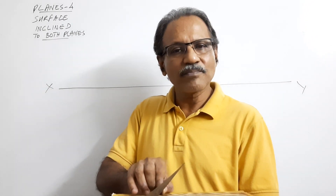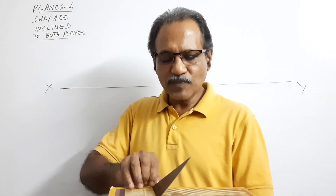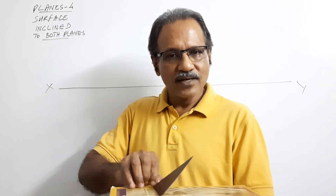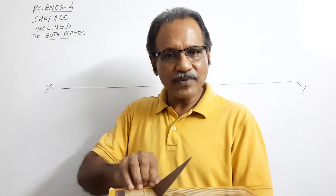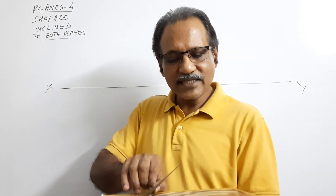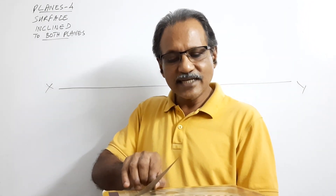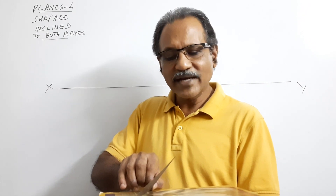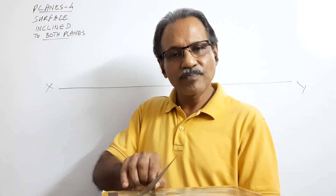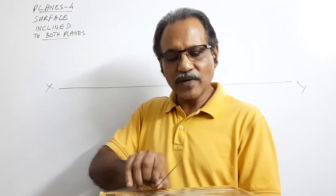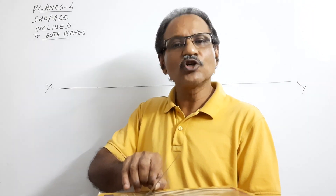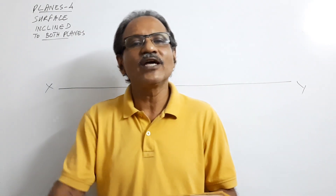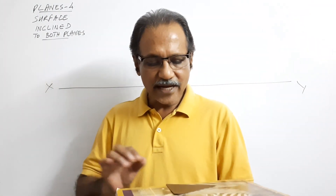This new plan is an isosceles triangle. This plan and the original plan are geometrically the same. This plan has one side perpendicular to the XY line. The side on which it is resting, which was initially perpendicular, now makes some inclination to VP. This plan and this plan are geometrically the same.